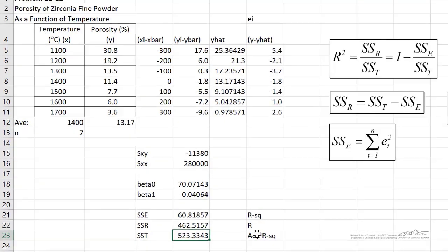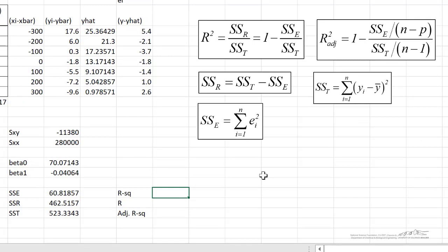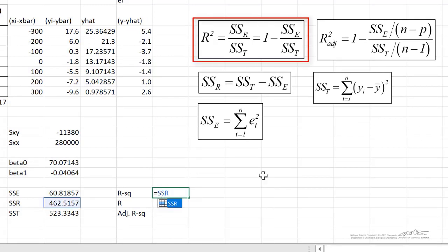Now that we know SSE, SSR, and SST, we can calculate the R squared. R squared, again, is given by the ratio of SSR divided by SST, or 1 minus SSE over SST, and that's 0.884. We can always take the square root of R squared to get our correlation coefficient, R, of 0.94.